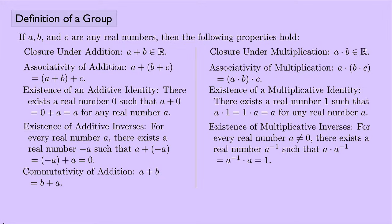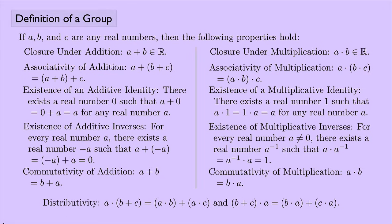Commutativity of addition says that you can do A plus B or B plus A — order doesn't matter. We have the analogous property for multiplication. And finally, we have the distributive law that connects addition and multiplication: A times the quantity B plus C can be rewritten as A times B plus A times C, and B plus C times A can be broken up as B times A plus C times A.